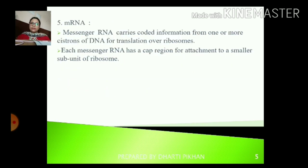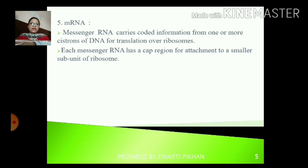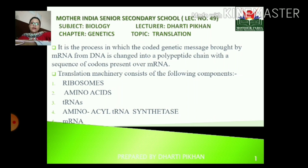The fifth component is mRNA — that is messenger RNA. It carries coded information from one or more cistrons of DNA for translation over the ribosomes. As the name suggests, messenger RNA carries information. Each messenger RNA has a cap region for attachment to the smaller subunit of ribosomes. So these were the components used in translation. We will continue further in the next lecture. This is all for today — we saw what translation is and what its components are. We will continue in the next lecture. Have a great day.